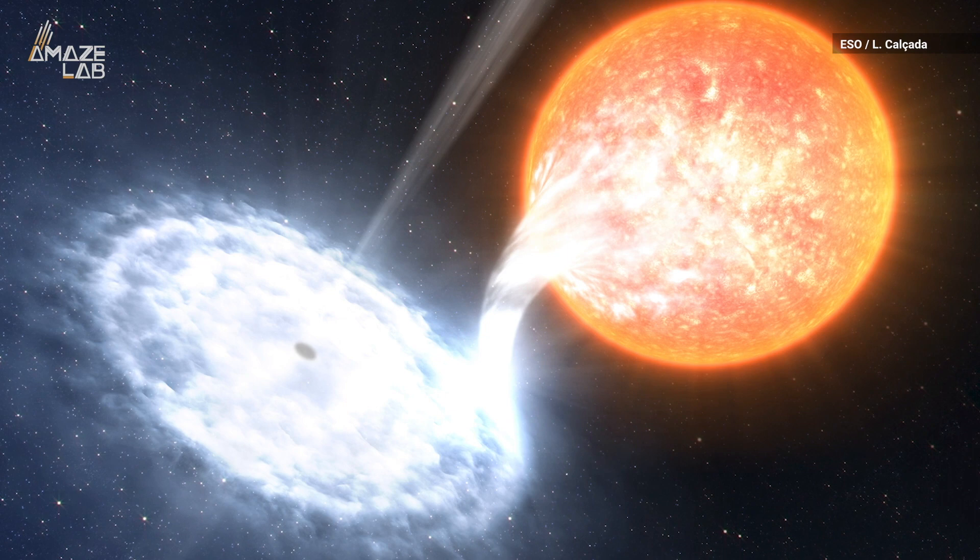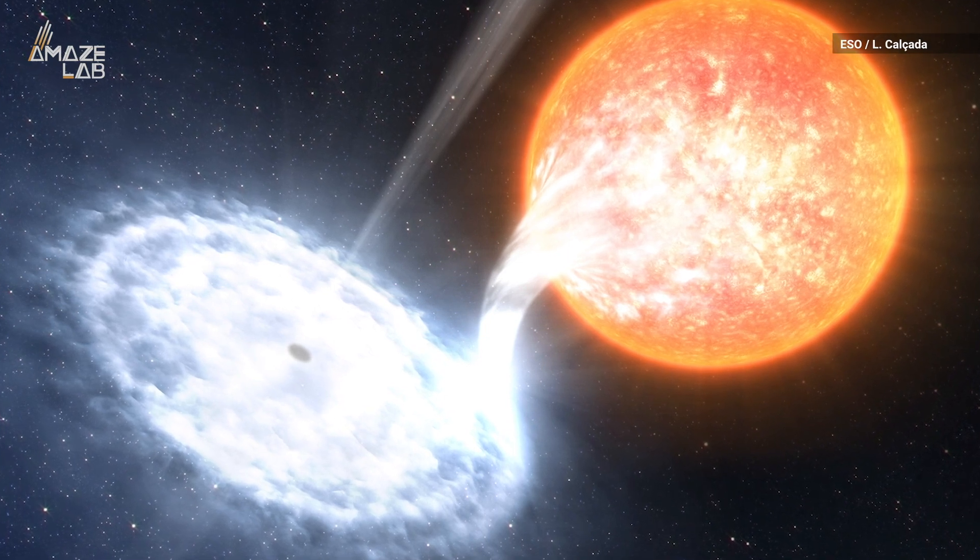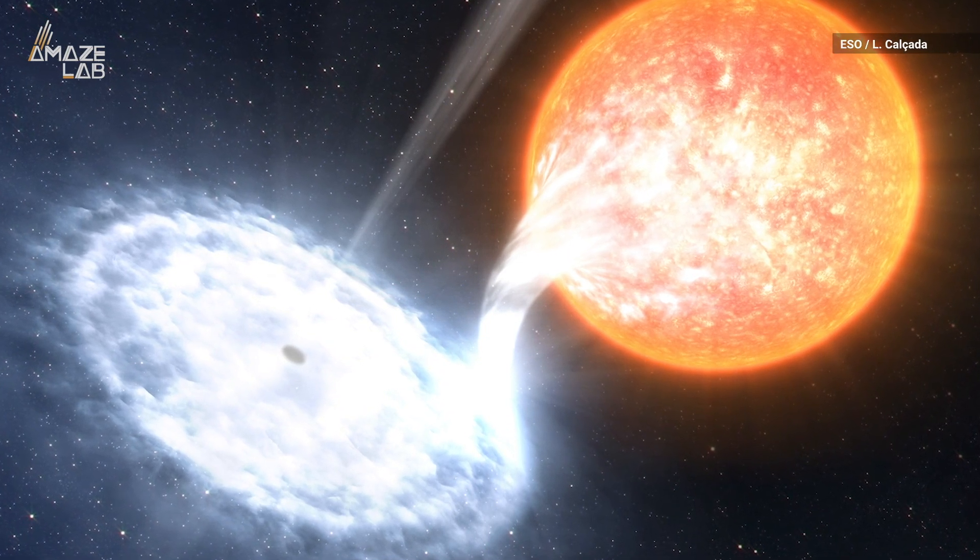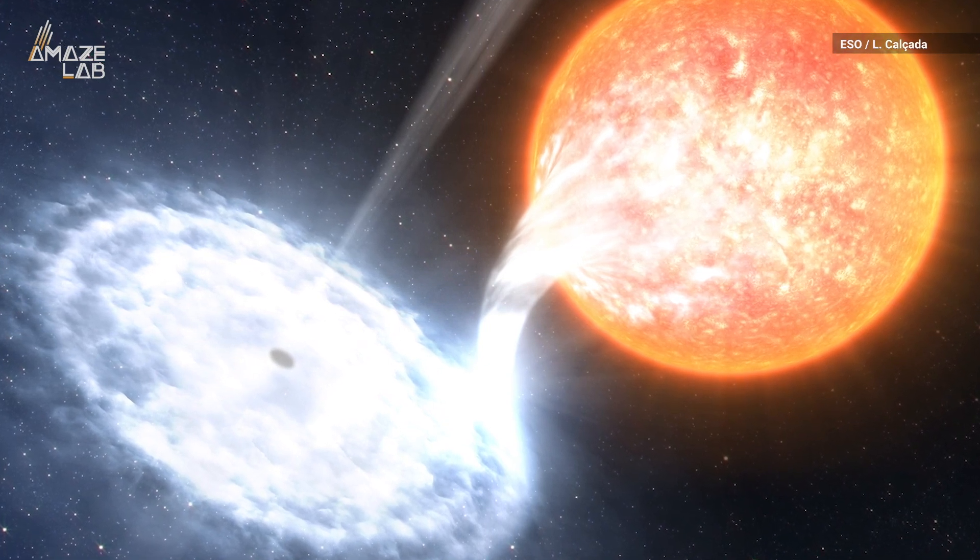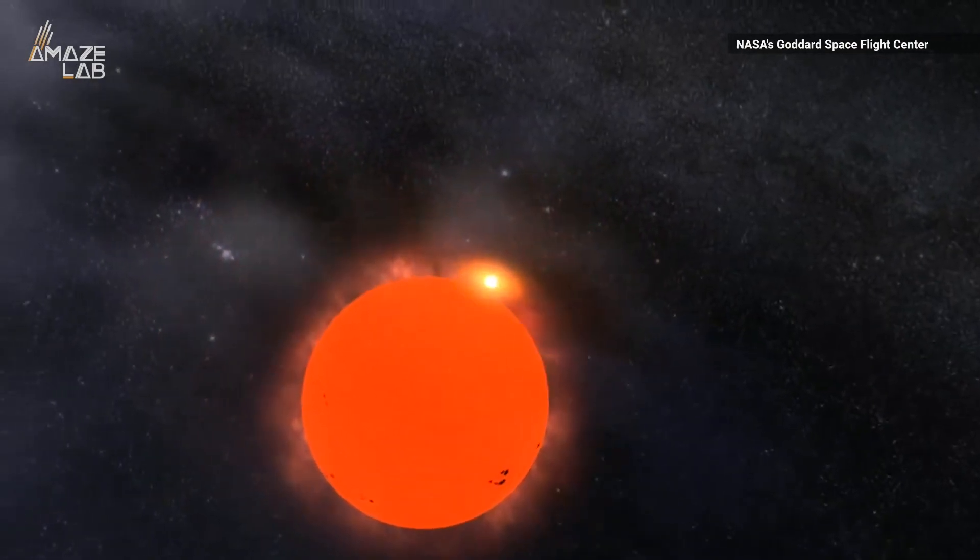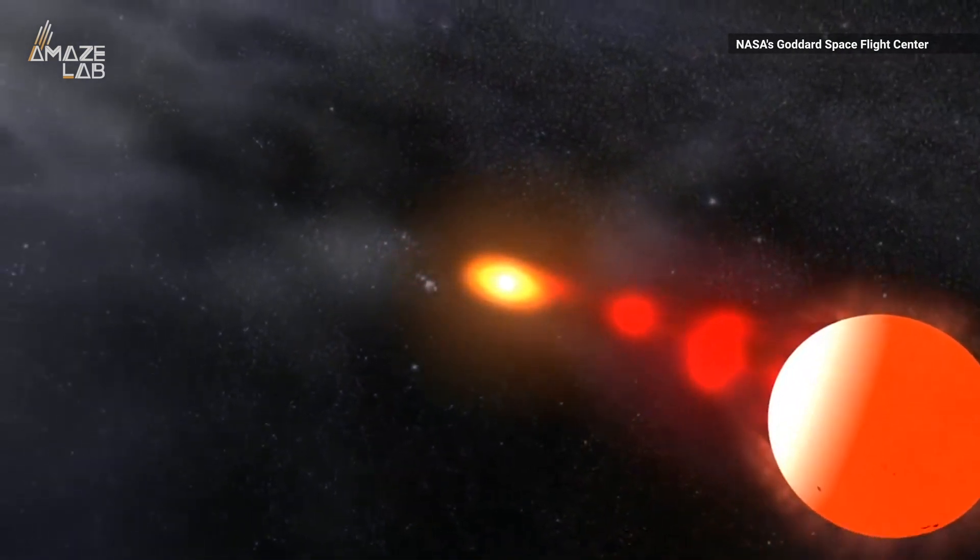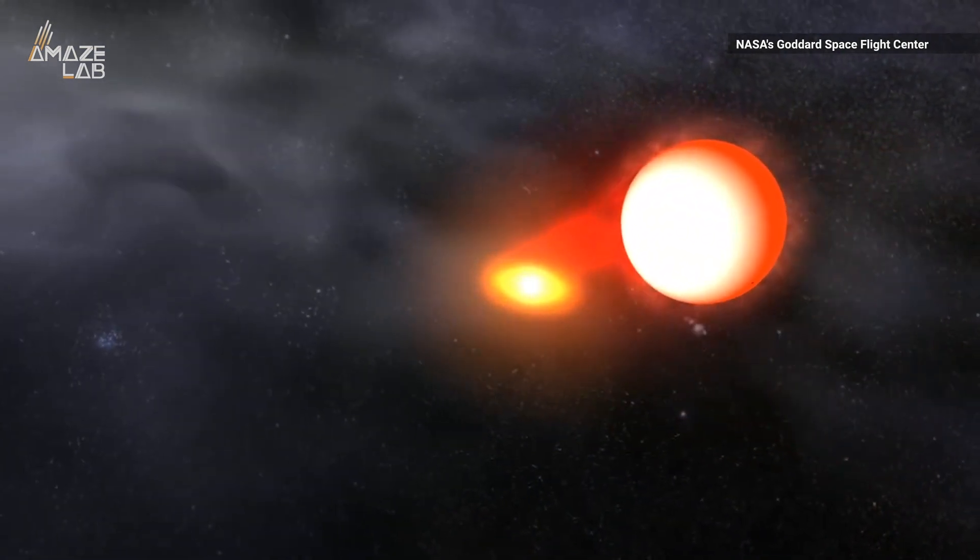Space.com says when stars like our sun die, the companion star can either start the final stages of its life or may get a little too close, triggering a destructive dance. The white dwarf can gobble up its material, eventually causing a cataclysmic variable star or a blast of radiation.